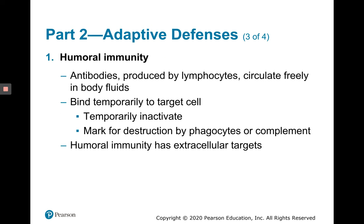The humoral arm produces antibodies. These antibodies are produced from B lymphocytes that have turned into plasma cells. Plasma cells produce antibodies, but plasma cells are derived from B lymphocytes. These antibodies circulate freely in the body fluids and are able to bind temporarily to target cells and inactivate them via opsonization, which can mark microbes for destruction by phagocytes or complement.